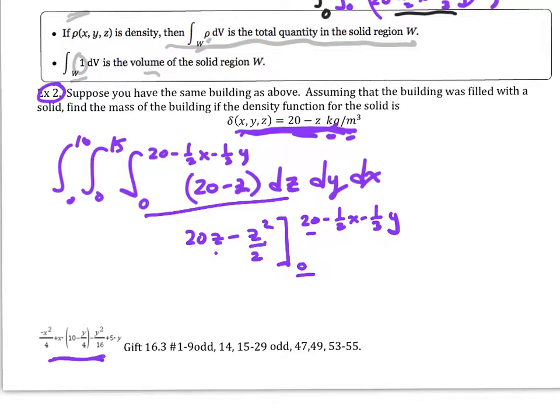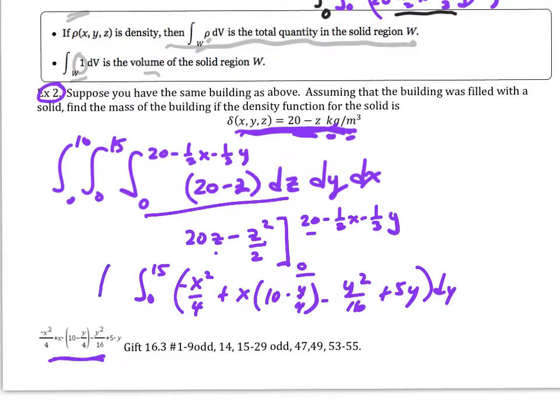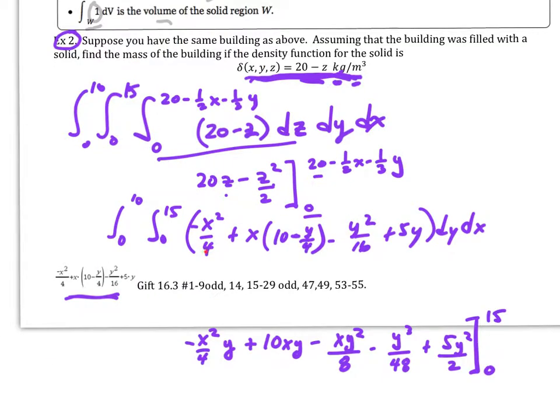When I plug this in with the upper limit and the lower limit I'm just going to get this here. So now my integral becomes 0 to 15 of my negative x squared over 4 plus x times my 10 minus y over 4 minus y squared over 16 plus 5y. That's going to be dy and then 0 to 10 on my x's.